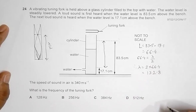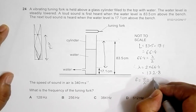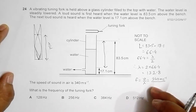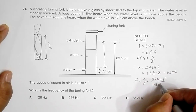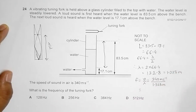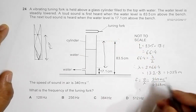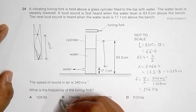Now with the speed of sound given as 340 meters per second, frequency equals velocity divided by lambda. Converting lambda to meters gives 1.328 meters. So frequency equals 340 divided by 1.328, which equals approximately 256 Hz. The answer choice that matches this is choice B.